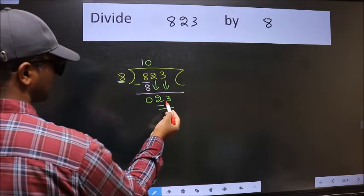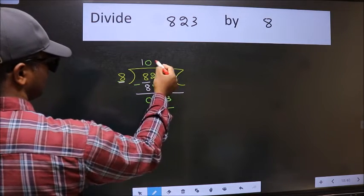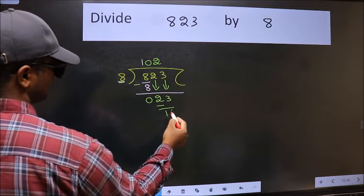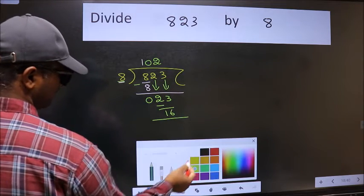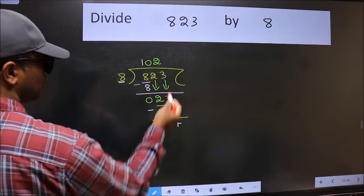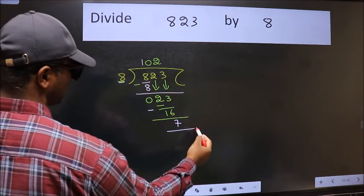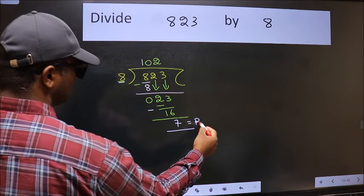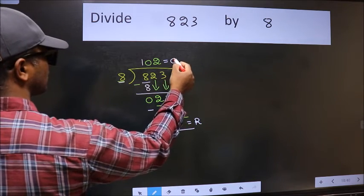Now 23. A number close to 23 in the 8 table is 8 times 2, which is 16. Now we should subtract. We get 7. No more numbers to bring down, so we stop here. This is our remainder, and this is our quotient.